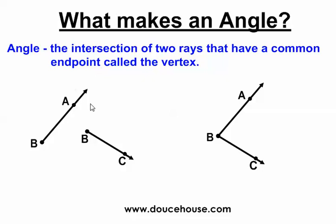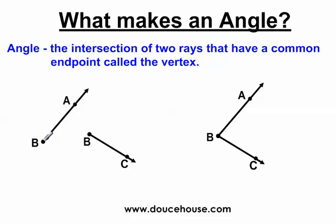I have two rays here: ray BA and ray BC. Each of them have an endpoint — this is endpoint B. Rays start with an endpoint and then travel in one direction. This ray is traveling from B to A. This other ray also has endpoint B and is traveling through C. So both of these locations are the endpoints.